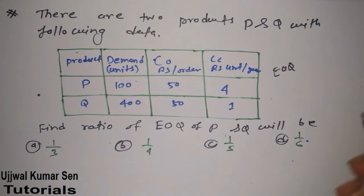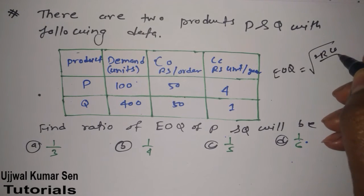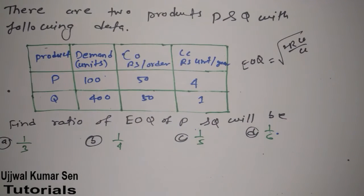So what is the formula for finding out EOQ? That is two R C naught by CC. What is R basically? That is consumption or demand you can say, and C naught is ordering cost and CC is carrying cost.